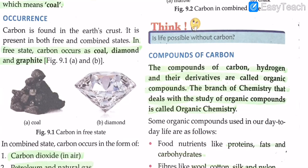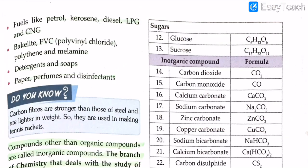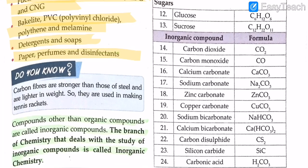Some organic compounds used in our day-to-day lives include food nutrients like proteins, fats, and carbohydrates; fibers like wool, cotton, silk, and nylon; fuels like petrol, kerosene, diesel, LPG, and CNG; and materials like Bakelite, PVC, polythene, melamine, detergents, soaps, paper, and perfumes. All of these are part of the organic chemistry branch.